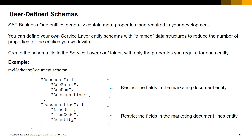In our example, the MyMarketingDocuments.schema file will restrict the properties as follows: for the typed document, including all marketing document entities, only the docEntry, num, and documentLine properties; and for the typed documentLine, only the lineNum, itemCode, and quantity properties.